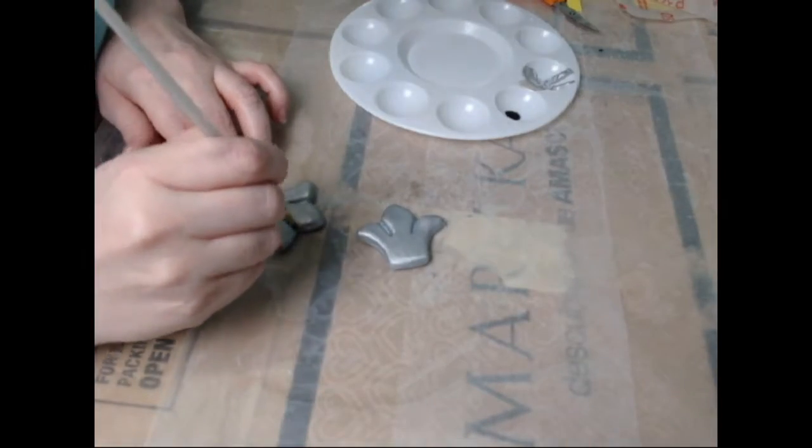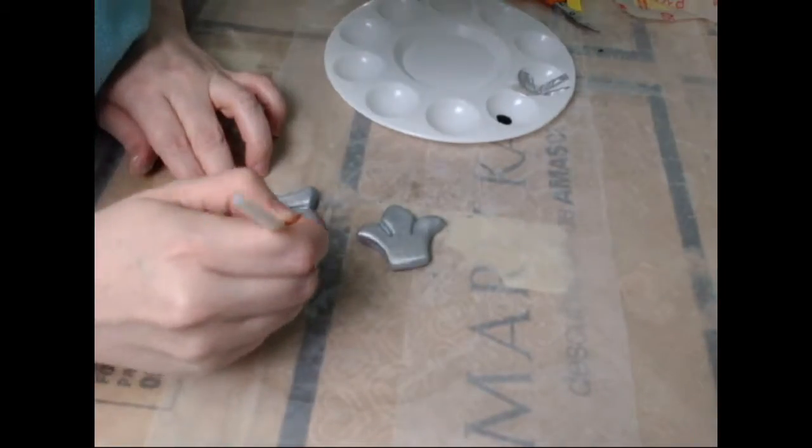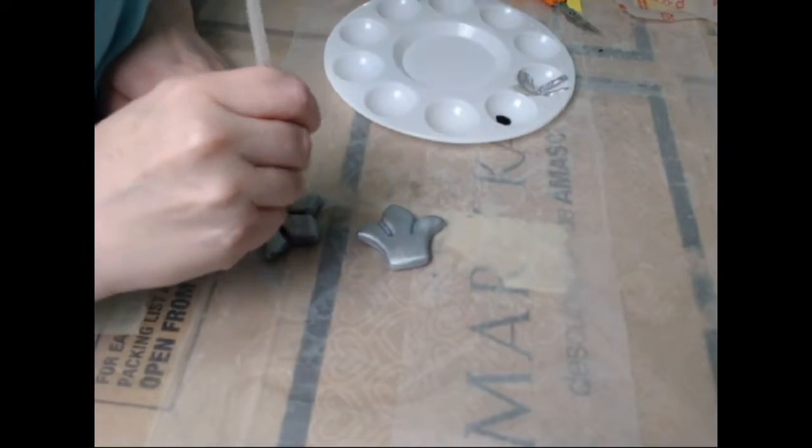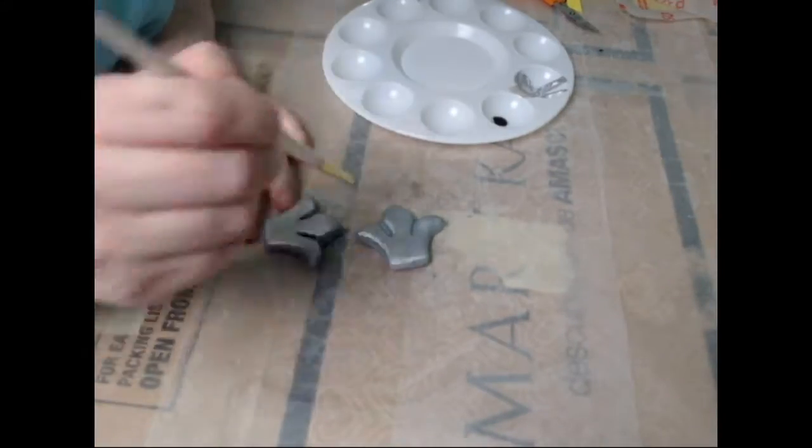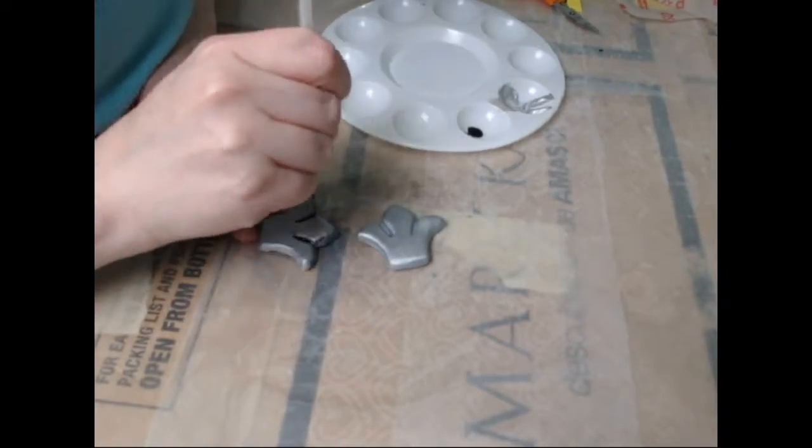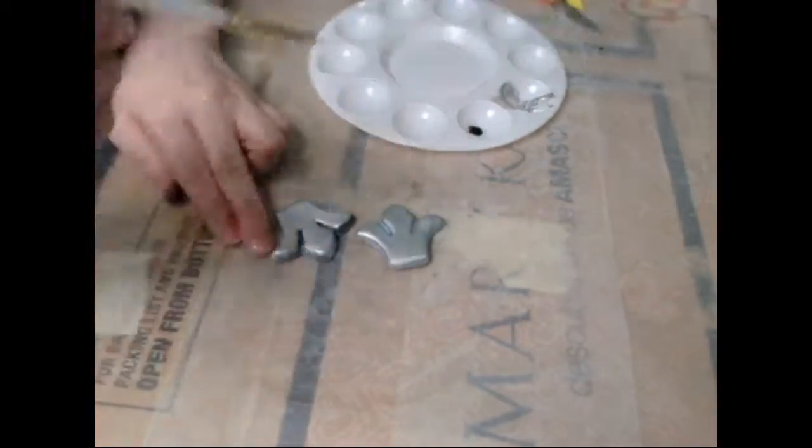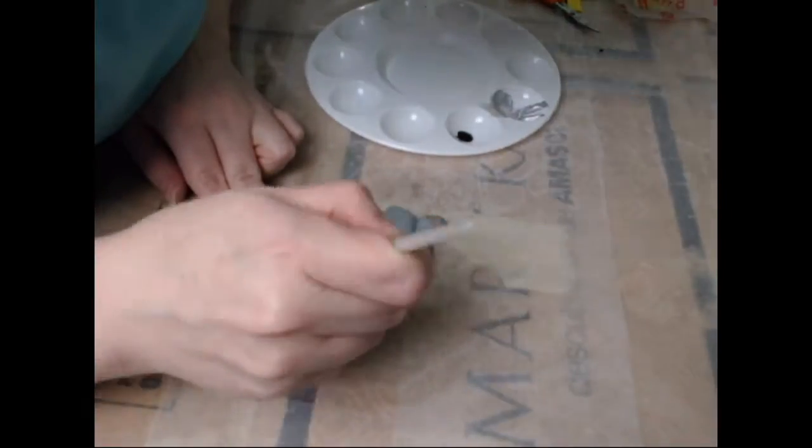Next we'll move to shadowing and aging the pieces. For this I'm using a simple black acrylic paint that I'm applying in the crevices and just around the edges of the pieces. To dilute the paint in between I'm also dipping my paintbrush in water which is off-screen just to give more of a wash effect.